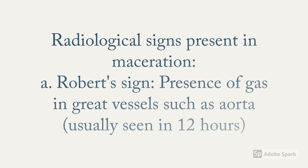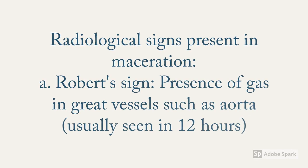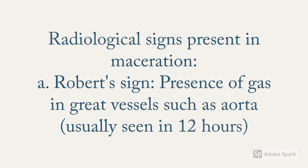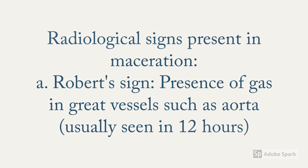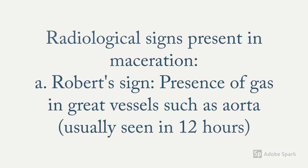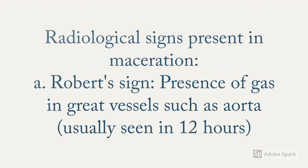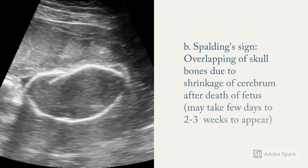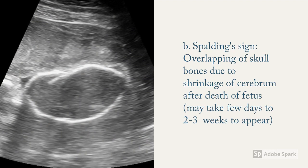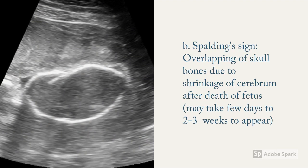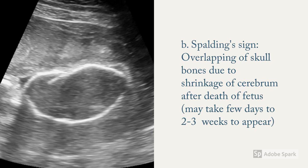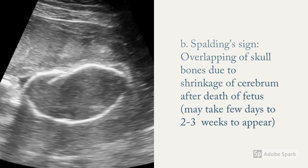You need to take note of the radiological signs present in maceration, which are Robert's sign and Spalding sign. Robert's sign shows the presence of gas in great vessels such as the aorta and is seen 12 hours after death of the fetus in utero. Spalding sign shows overlapping of skull bones due to shrinkage of the cerebrum after death of the fetus, and it may take a few days to two to three weeks to appear.